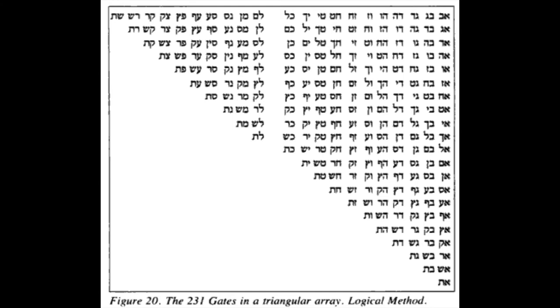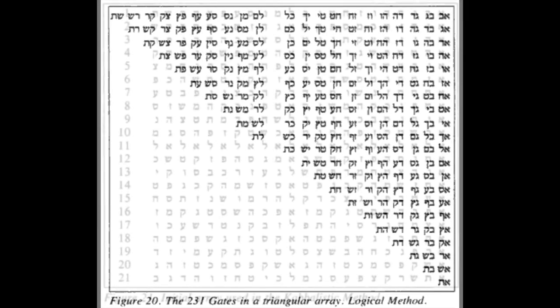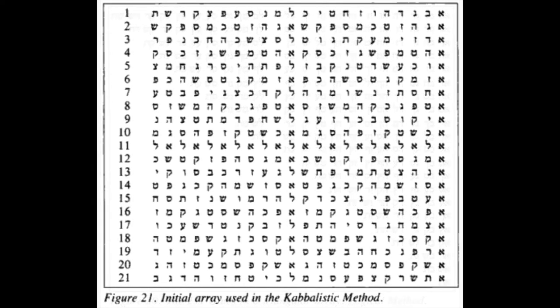This arrangement of 231 words of two letters each can be plotted as a chart with 22 rows and 22 columns that is only half full. In Kabbalah, this is called the logical method for deriving these 231 words of two letters each. Another method for deriving these results is called the Kabbalistic method and involves employing the Albam cipher to create a scrambled arrangement of the results. Both the Albam cipher and the resultant Kabbalistic method arrangement of the 231 gate two-letter words are encryption methods used by Hebrew Kabbalists prior to the invention of the Vigenère cipher in 1553 AD.